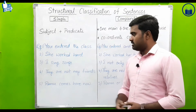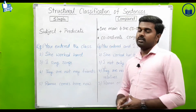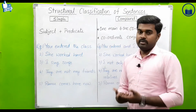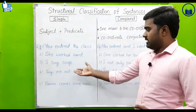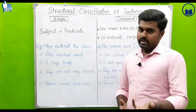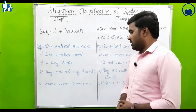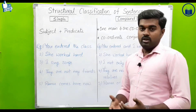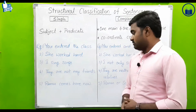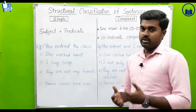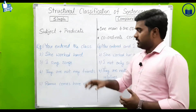More simple sentence examples: 'She worked hard.' 'I sing songs.' 'They are not my friends.' 'Ramu comes here now.' Each of these has just one subject and one predicate, so they are all simple sentences.